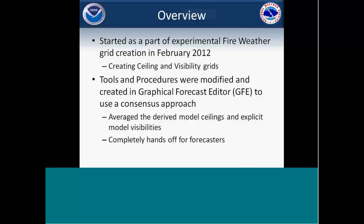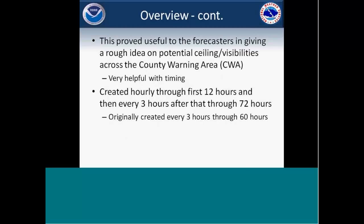We expanded it out to look at a lot more models across the area, both from model RH or straight model visibilities or cloud cover ceiling heights. This was completely hands-off to the forecasters — we just had it run in the background to see how things were doing. One thing we found was it ended up having a pretty good handle on getting a rough idea of when ceilings would fall or rise, and the same thing with visibilities. Especially with the timing factor, maybe it wasn't perfect on the actual values, but it had that idea of when values would fall within a couple-hour period.